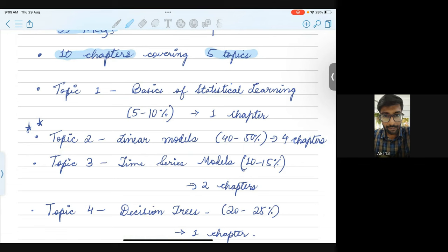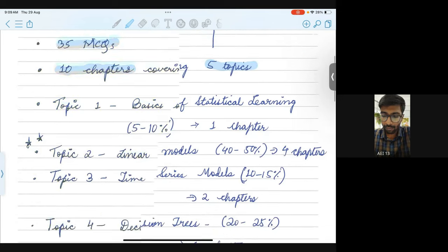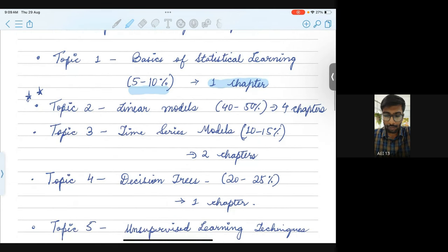By weightage, it means how many number of questions would show up in the exam. If you think of total 100% to be 35 MCQs, you can just calculate, right? If I say a particular topic is having a weightage of 5 to 10%, then you can calculate how many questions you can expect from this chapter in exam. What is topic 1? It's basics of statistical learning. Here you will be having one chapter from the text material and you could expect 5 to 10% of your questions from this particular topic. This is an introductory kind of chapter which talks about bias, variance, trade-off and topics like that.